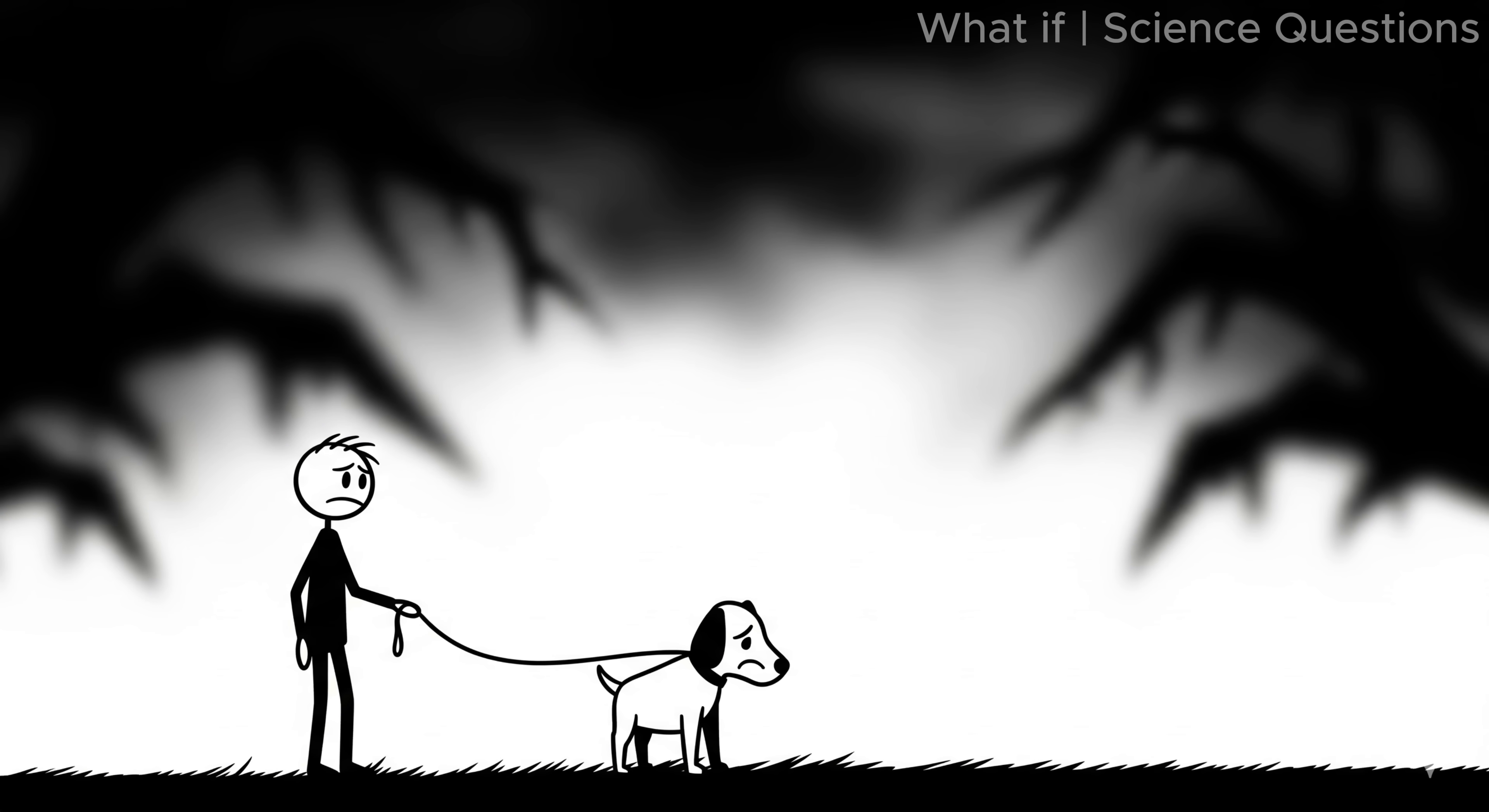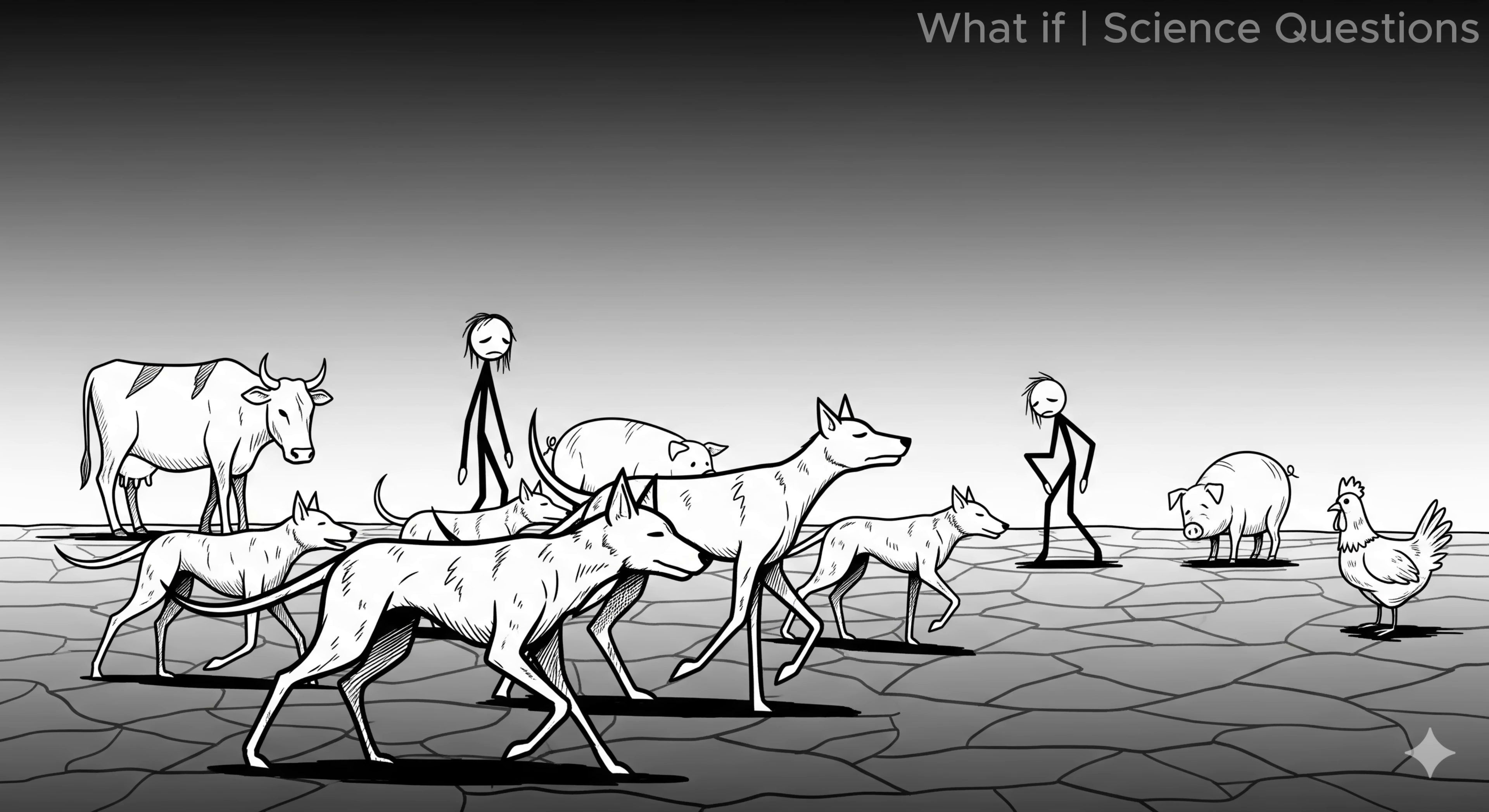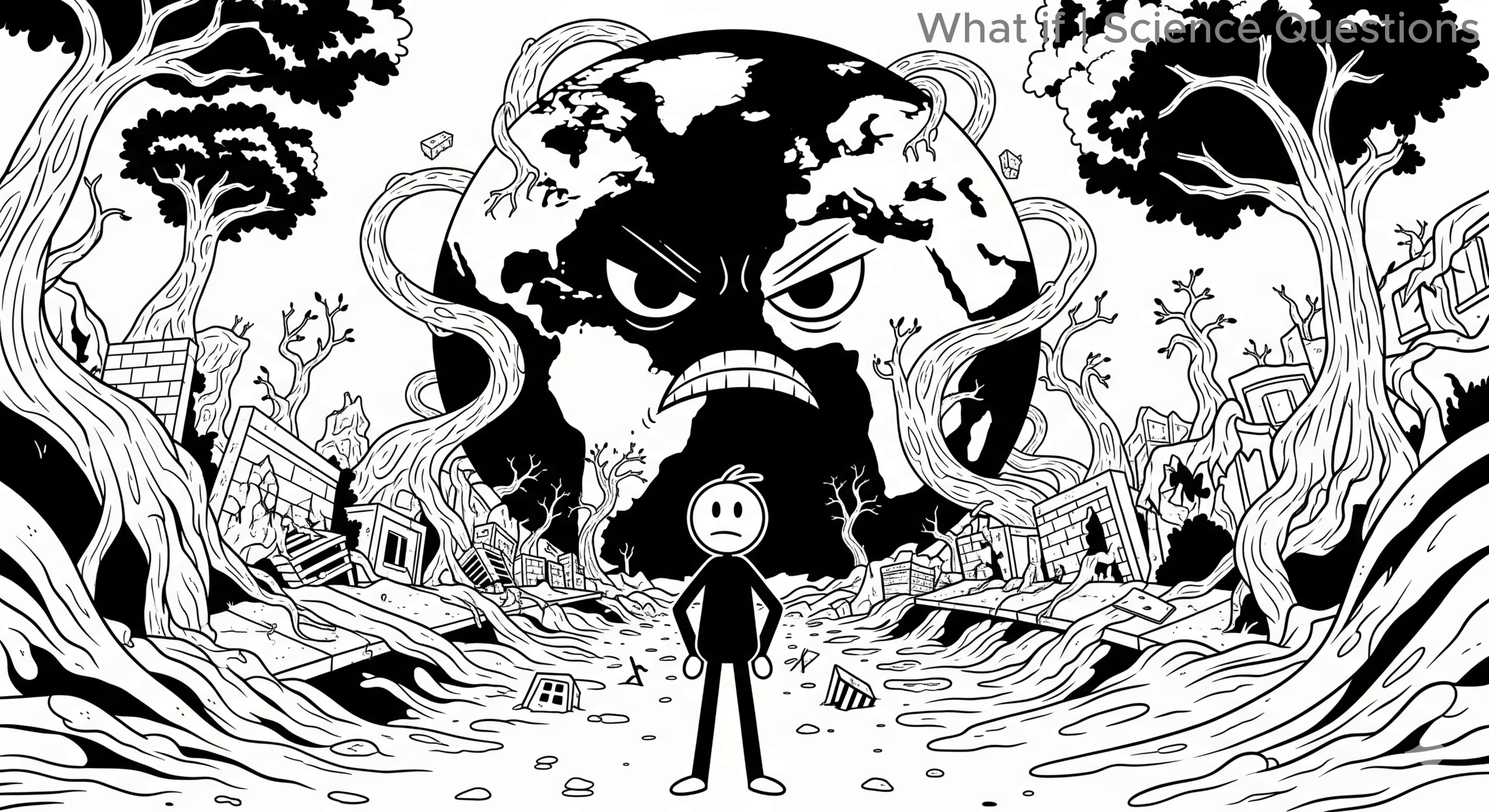Domesticated animals would face a harsher fate. Dogs, without humans to feed them, would scatter and form wild packs, while farm animals would mostly die off. The earth would not wait politely for us to return. It would begin to reclaim its territory almost immediately.